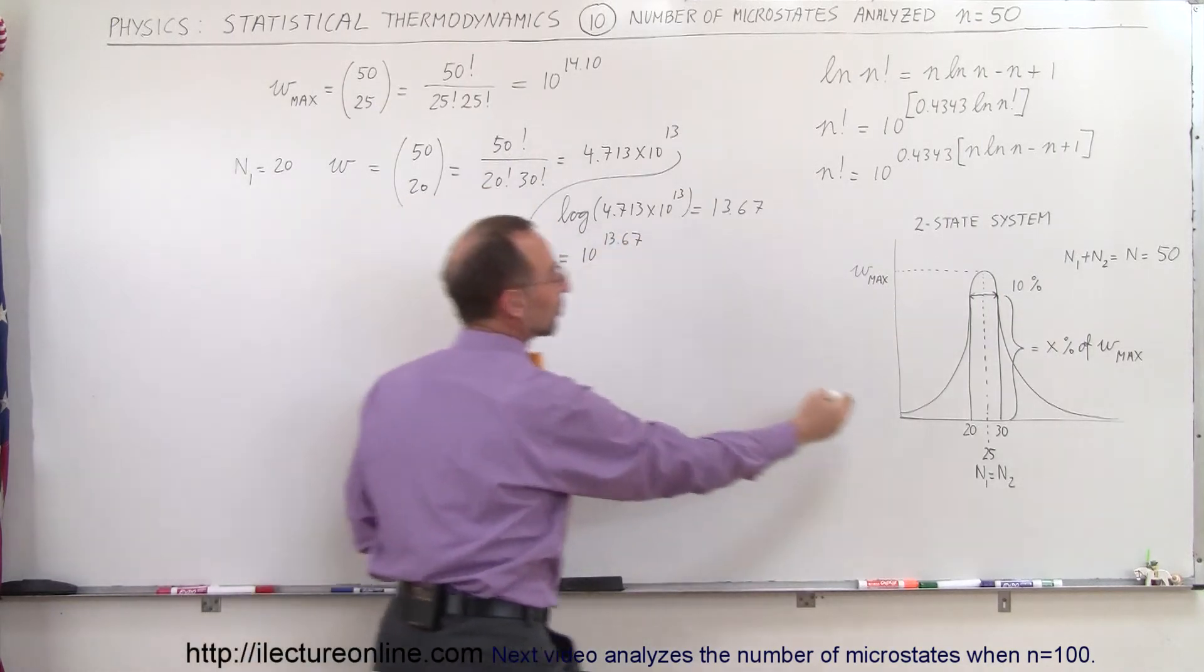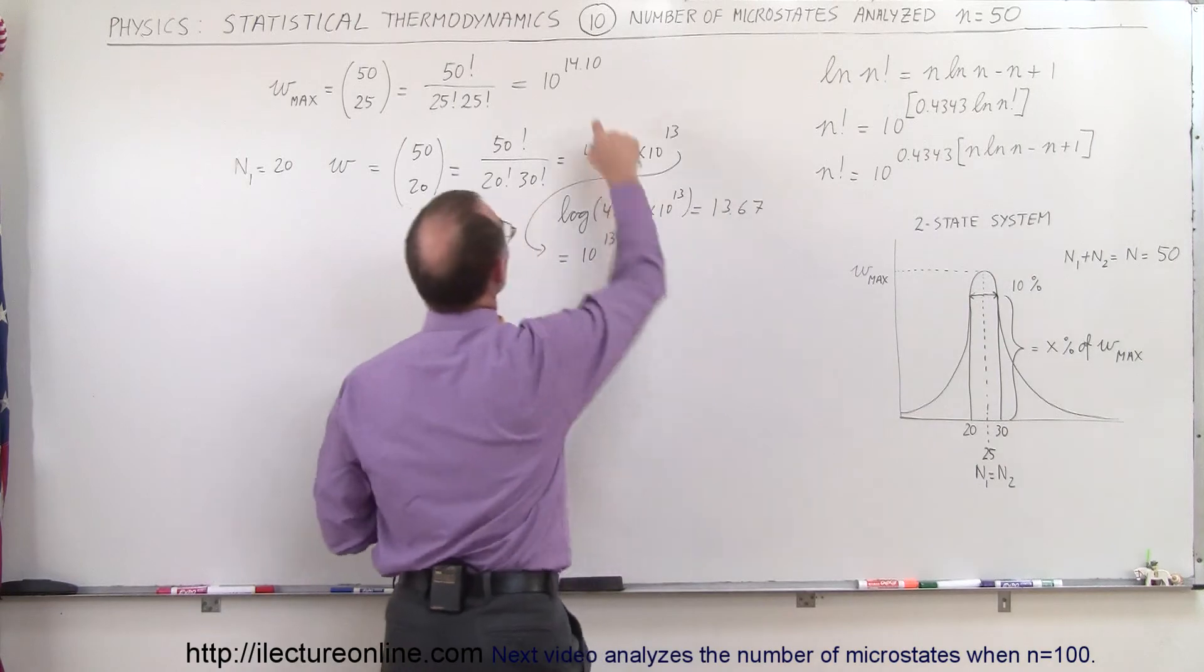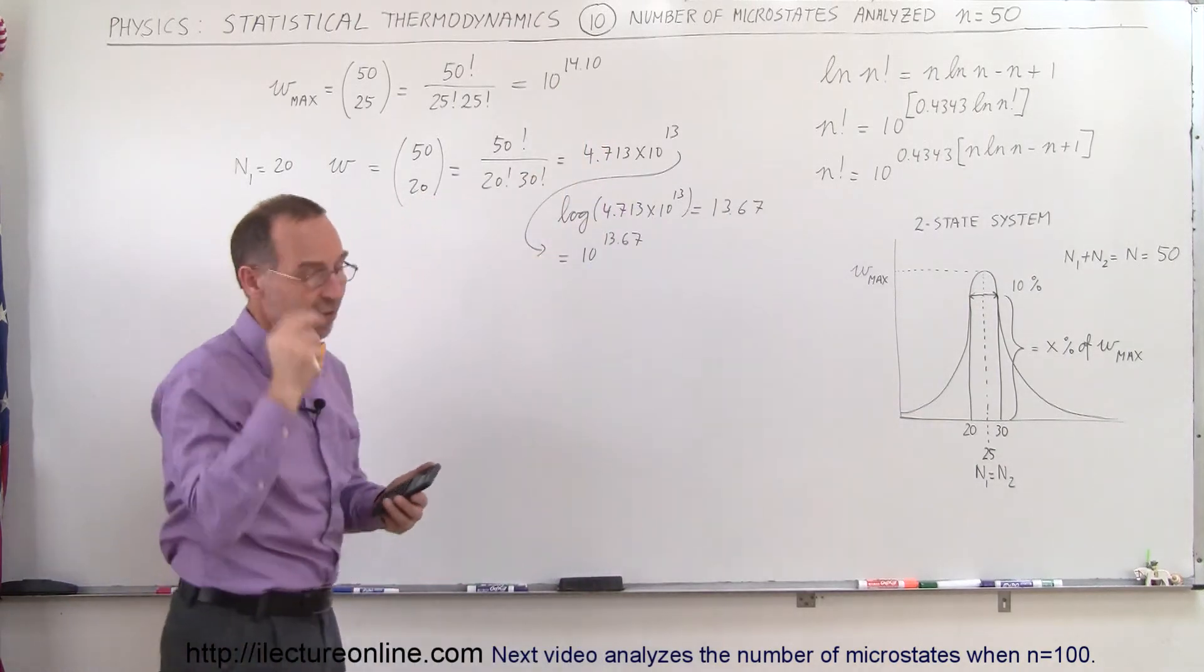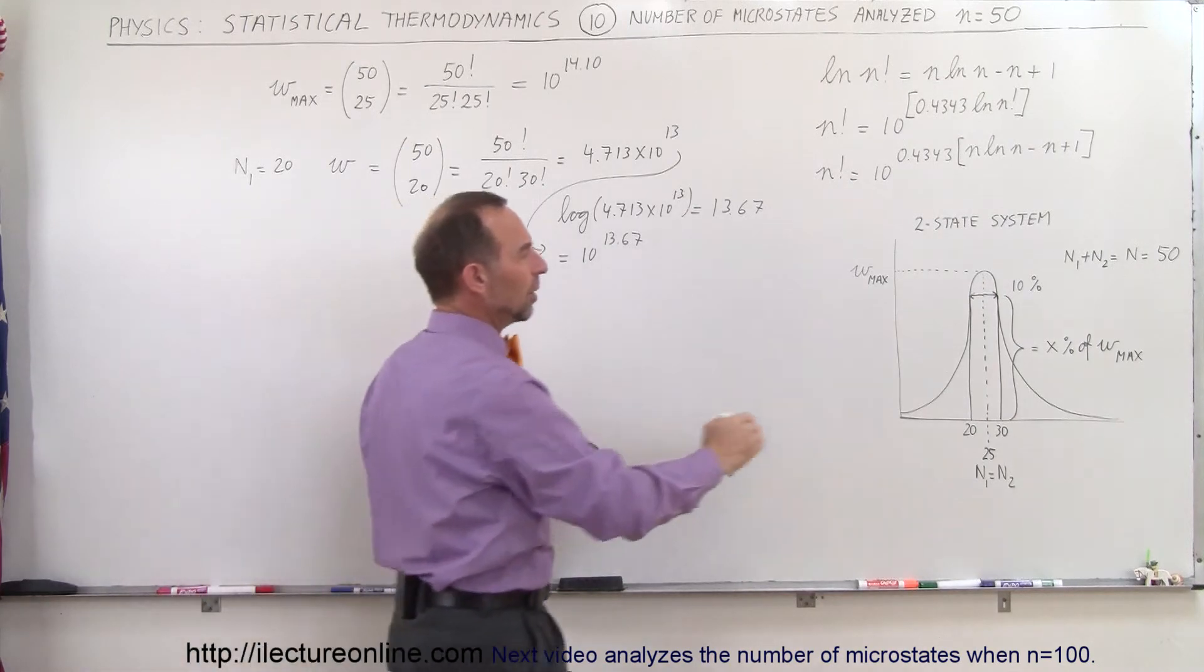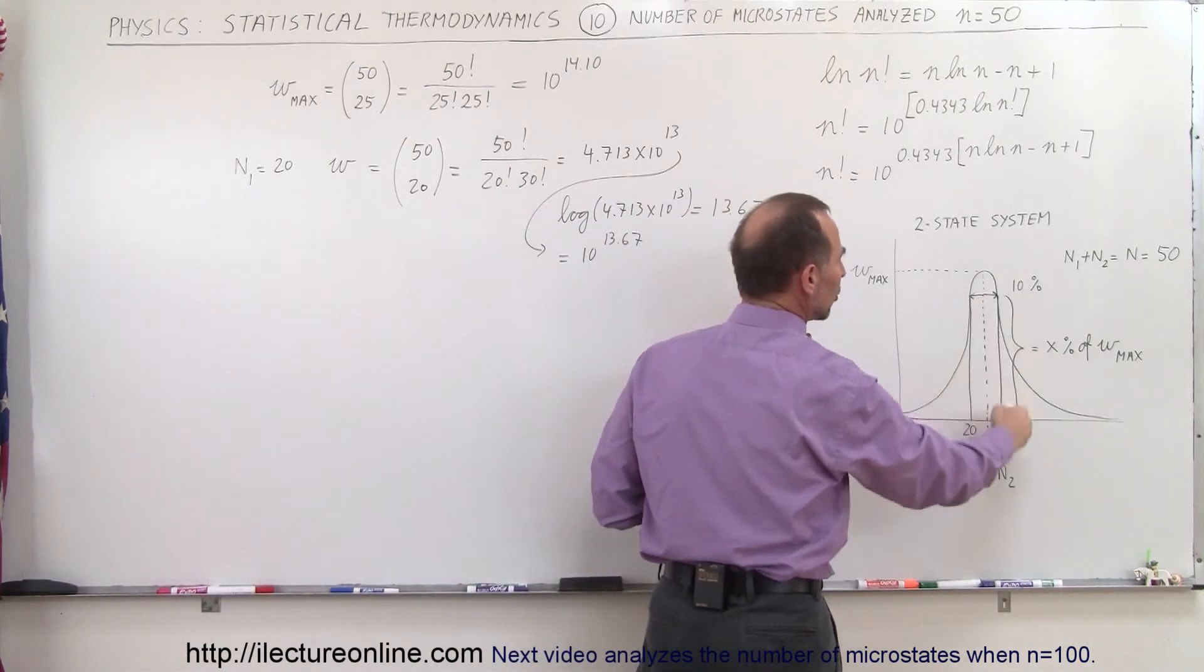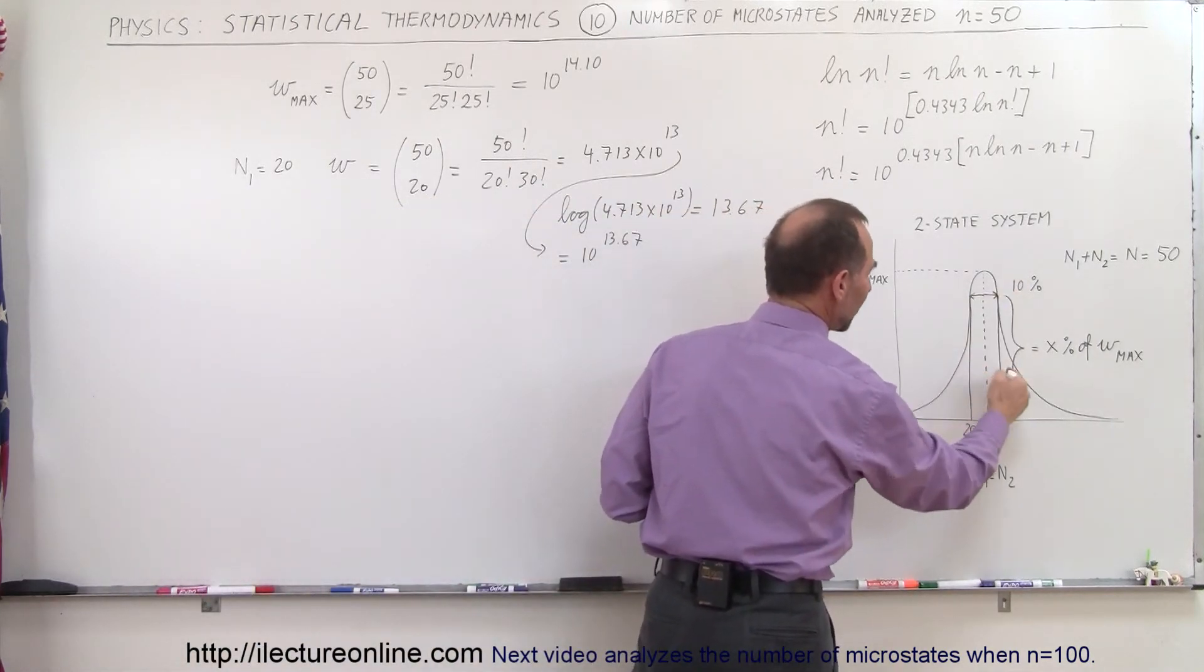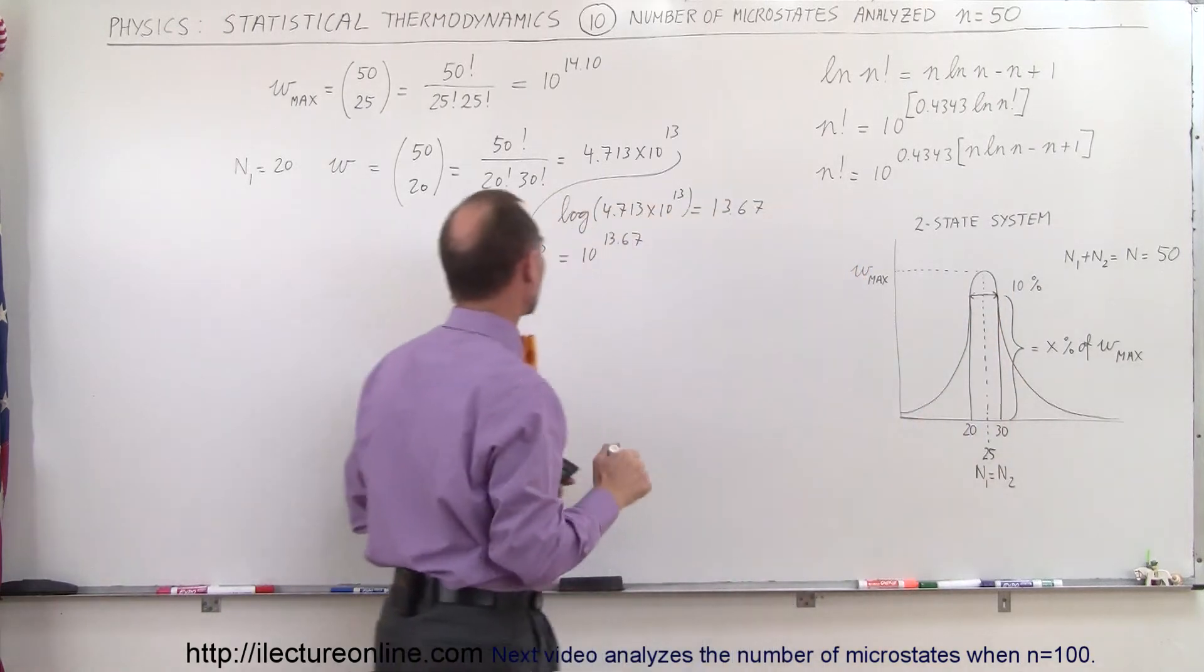So that's the relative height of the curve at this point relative to the maximum value. So what percentage is that? So how high is the column? How many are the number of microstates when we're 5 or 10% off the central maximum?